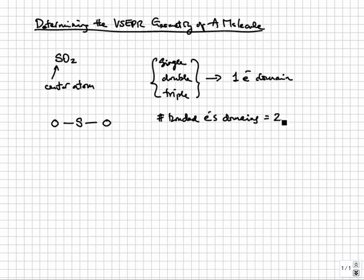Other than bonded electron domains, there may also be lone pairs on the center atom. Each lone pair counts as one electron domain. There is a quick way to determine how many lone pairs the center atom should have.